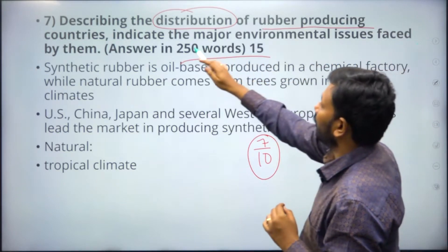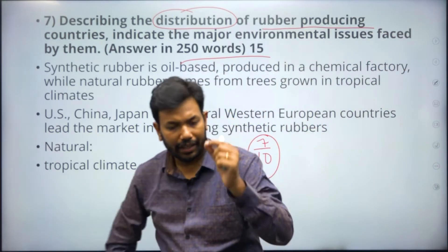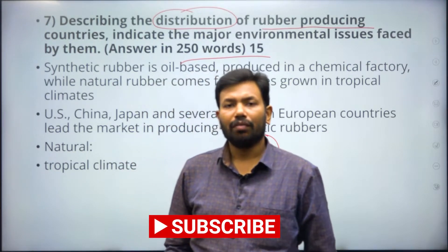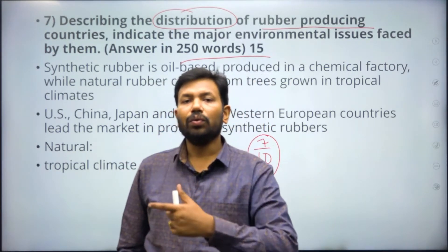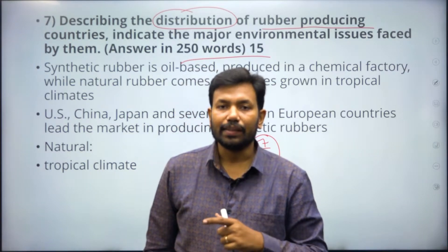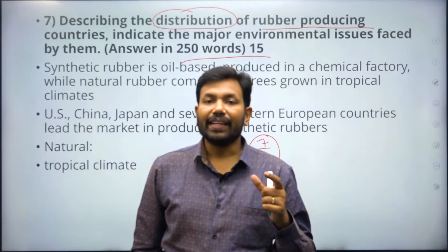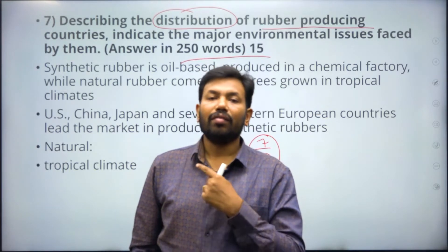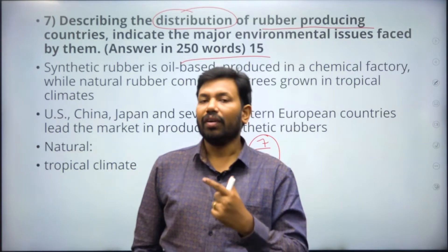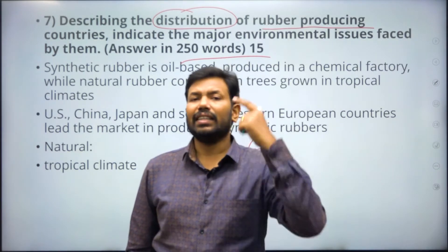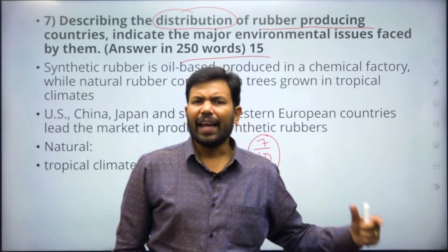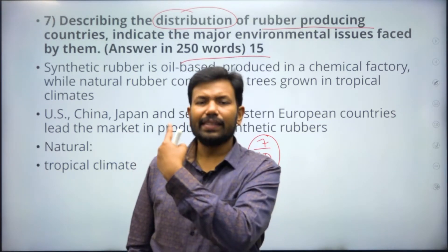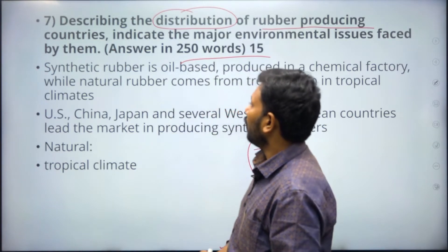For major environmental issues, consider how Cyclone Okhi suddenly struck India. This is because vast areas of the Western Ghats rainforest were converted into rubber plantations over decades. This deforestation contributed to climate change in the region, with Cyclone Okhi being the best example you can write about.